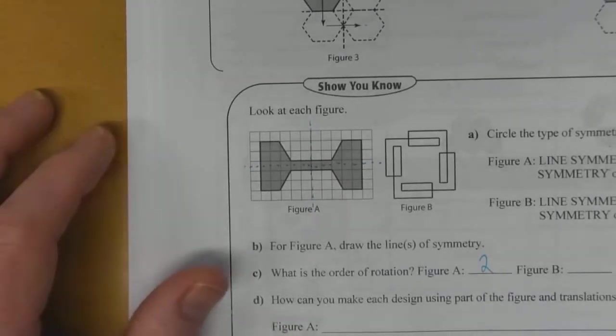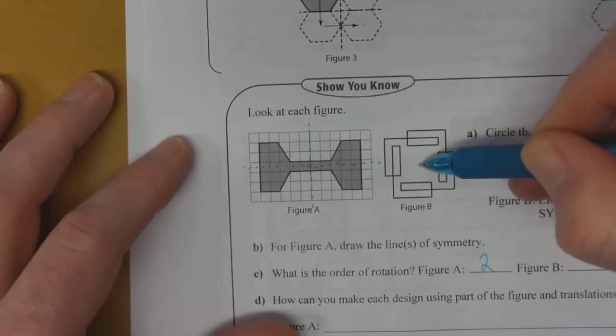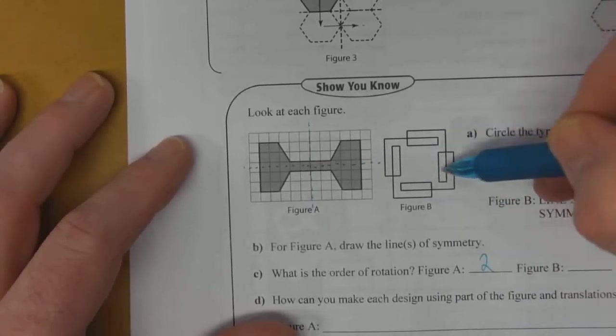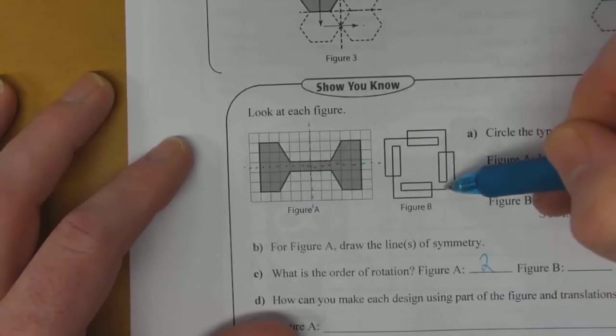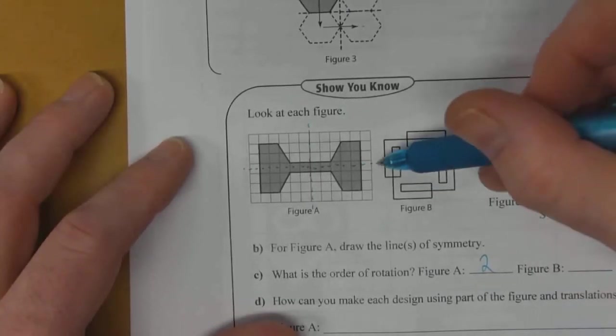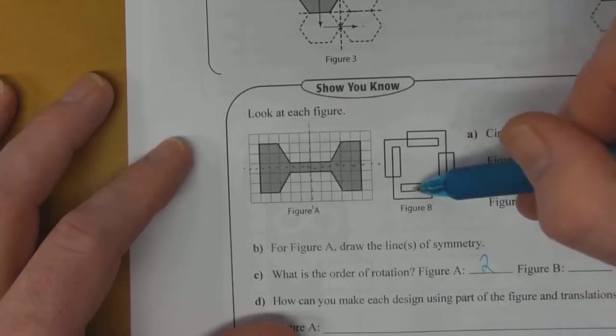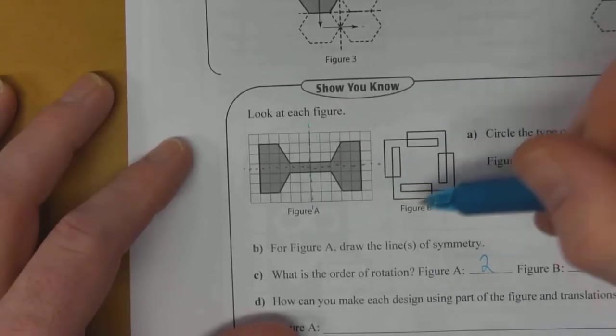So now let's look at B. If we draw a dotted line down the middle here, we can see that both sides are not the same. This rectangle is lower down. This one's higher up. If we draw a horizontal line, this rectangle's further left, that one's further right, so that doesn't work.